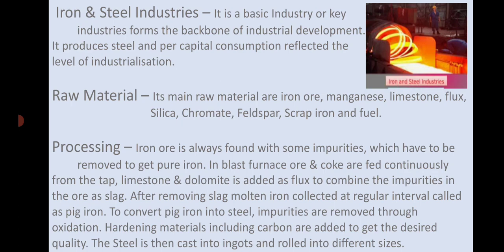In the processing of making steel from raw material iron ore to final goods — iron ore is always found with some impurities which have to be removed to get pure iron. In a blast furnace, ore and coke are fed continuously from the top. Limestone and dolomite are added as flux to combine the impurities in the ore as slag.